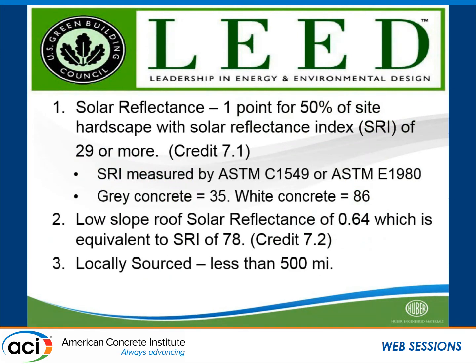Other sources for LEED credits include solar reflectance. With a solar reflectance index of 29 or more, you get a credit, measured by two ASTM methods. Gray concrete has a typical SRI value of 35 versus white concrete, which is 86. Gray concrete would meet the solar reflectance requirement at 29, but you could also get the additional credit for a low-slope roof, which requires a reflectance equivalent to 78. You're not going to get that 78 from gray concrete — you have to use white concrete. And of course, you can get a locally sourced credit for materials within 500 miles.